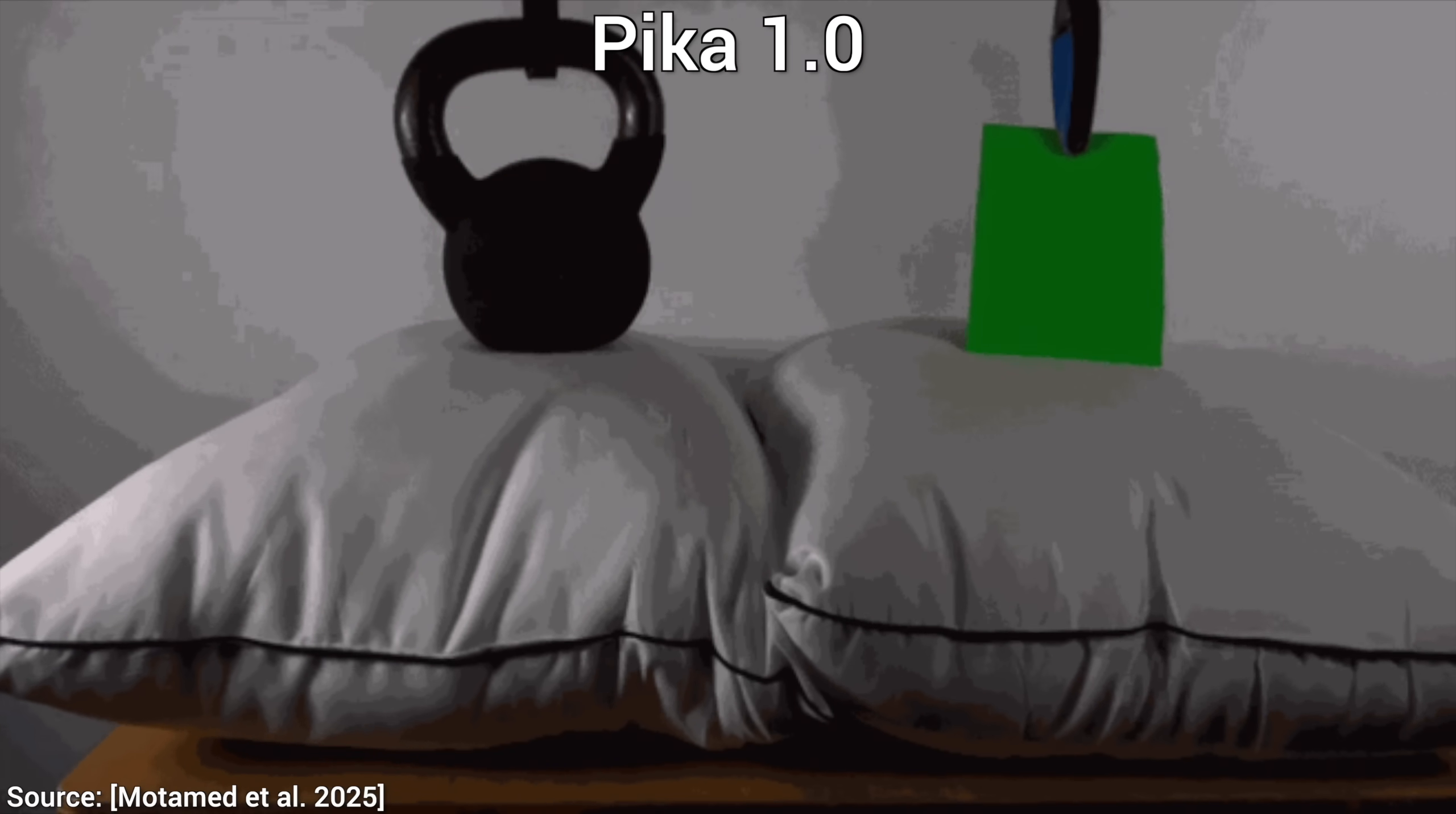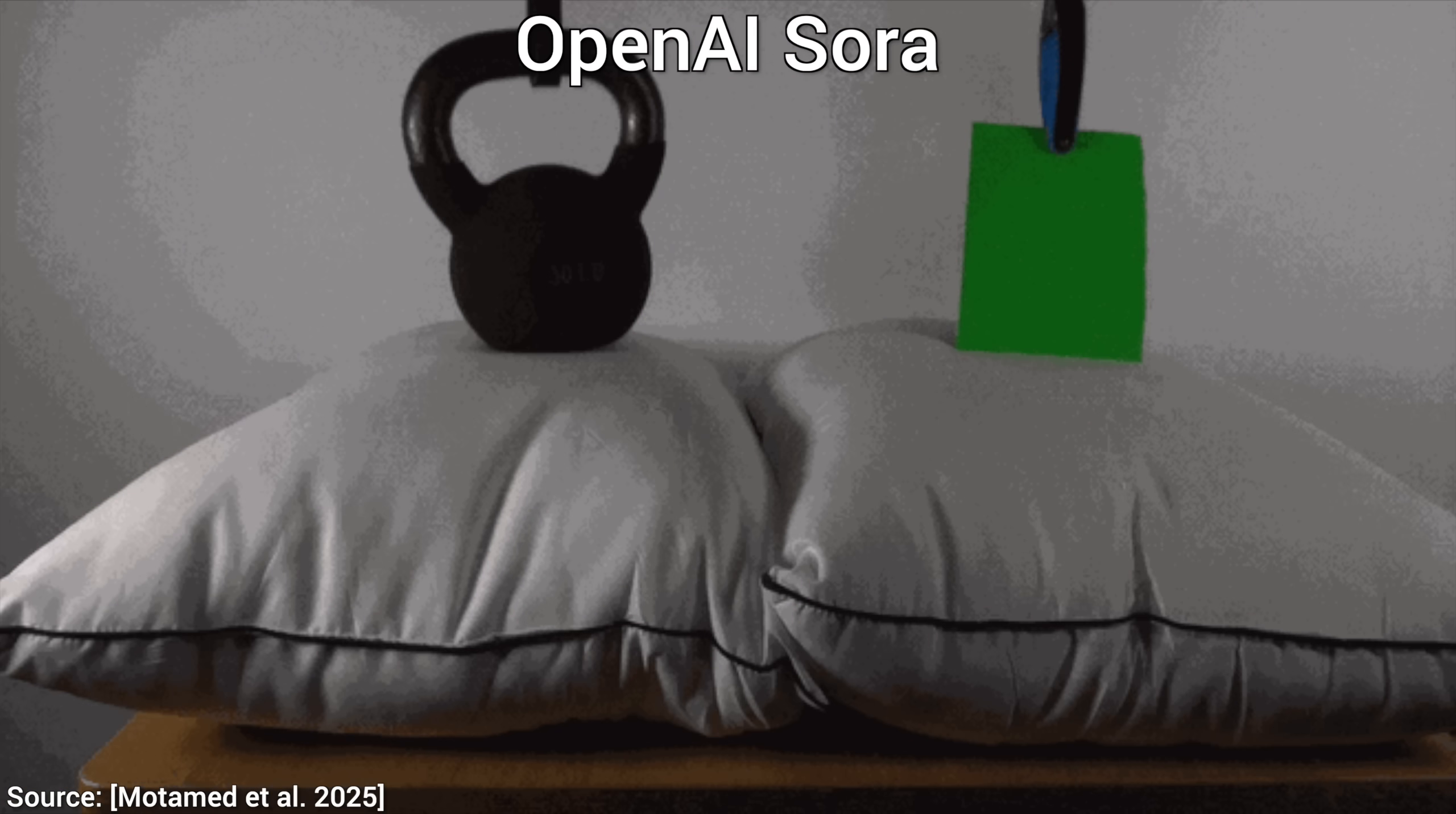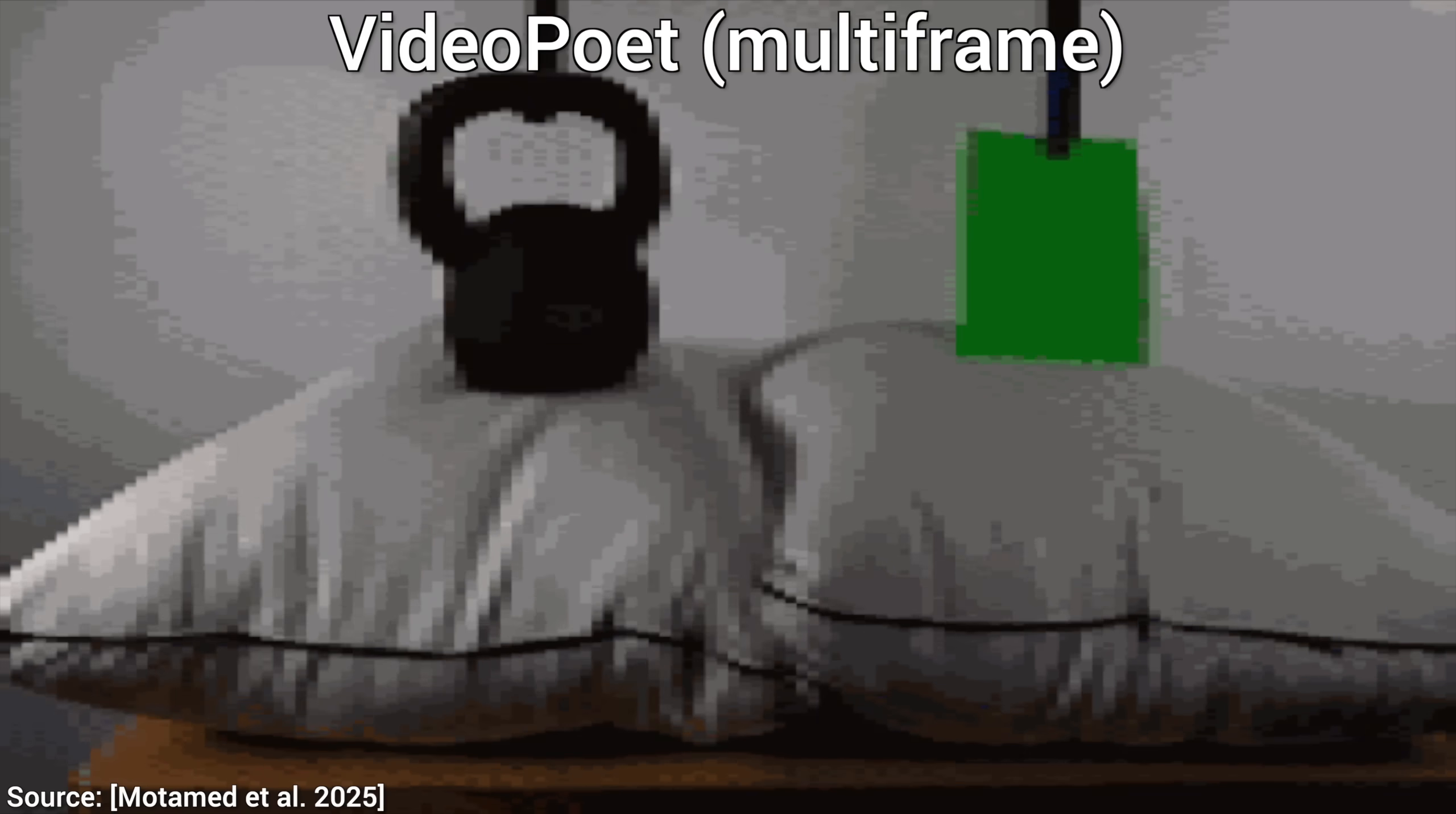Pika 1.0 says nothing to see here, just zoom in, just keep zooming. And then OpenAI's Sora says, well, I do not know what it says. Wow, all of them are absolute disasters.